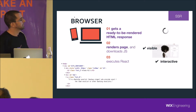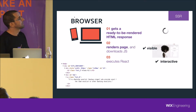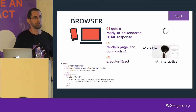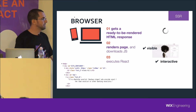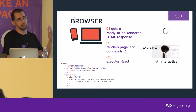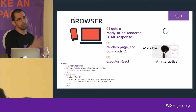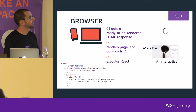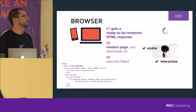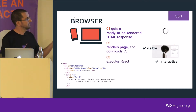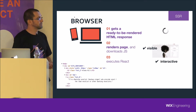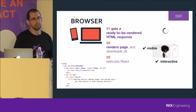In the server flow — the SSR flow — you get a response with all the HTML inside. The browser renders the page, all the images, and all the DOM elements, and the site is visible. The browser then downloads all the JavaScript again and executes React, and then the site is made interactive.